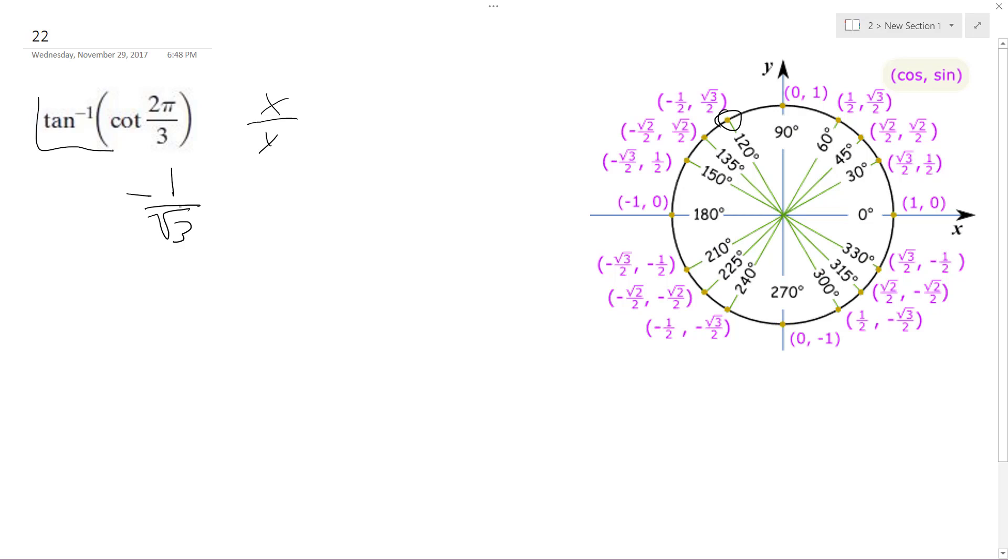So we need to know where the inverse tangent is equal to that. The inverse tangent is bound between negative π over 2 and π over 2.